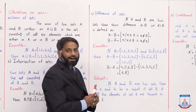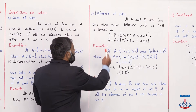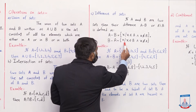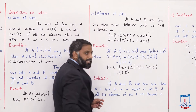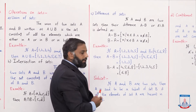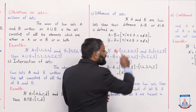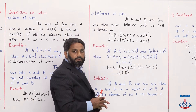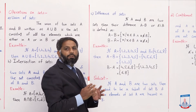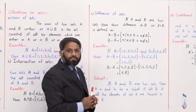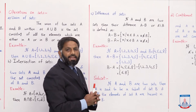اسی طرح جب B − A find کرنا ہے تو: B − A = {x | x ∈ B and x ∉ A}۔ B − A میں B کے وہ elements جو set A میں نہیں ہیں وہ لکھے جائیں گے۔